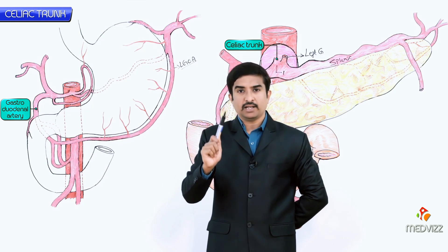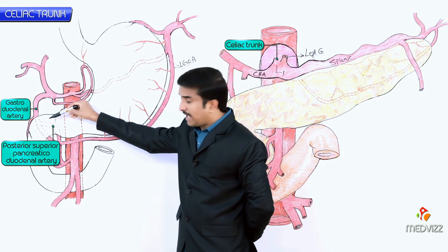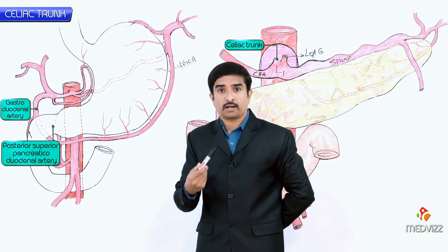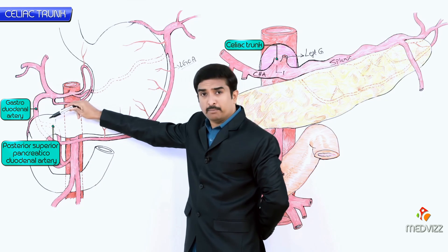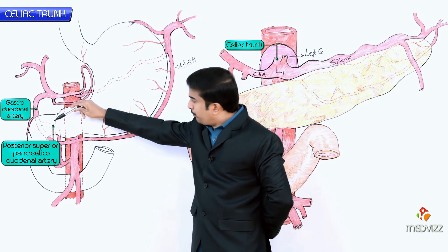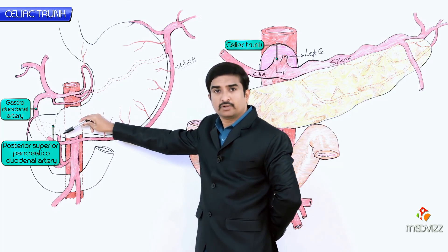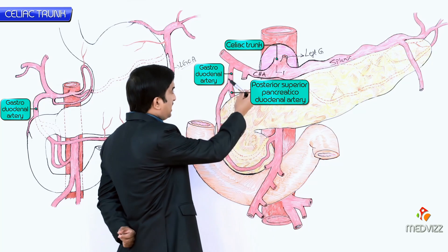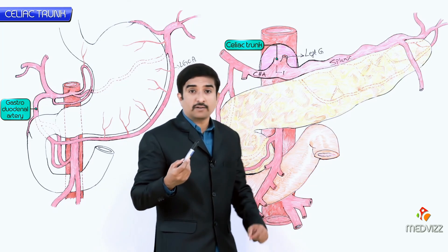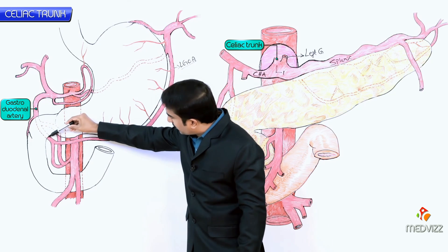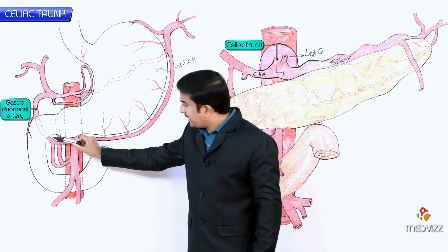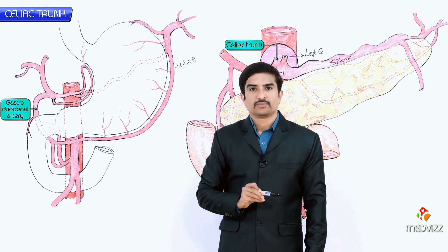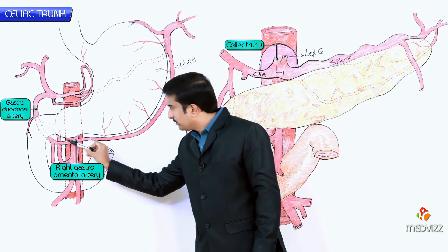The gastroduodenal artery is very important. It gives off the posterior superior pancreaticoduodenal artery near the upper border of the superior part of the duodenum. On reaching the lower border of the superior part of the duodenum, the gastroduodenal artery divides into its terminal branches.